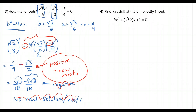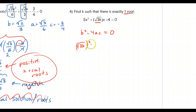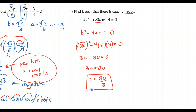Number 4 says find k such that there is exactly one root. We know that exactly one root means the discriminant b² − 4ac should equal 0. So for b we have √(3k), we're going to square that, minus 4 times a term which is 5, times c term which is 4, set equal to 0. Squaring √(3k) gives 3k, so 3k − 80 = 0. Adding 80 and dividing, k = 80/3 in order for this quadratic to have exactly one root.